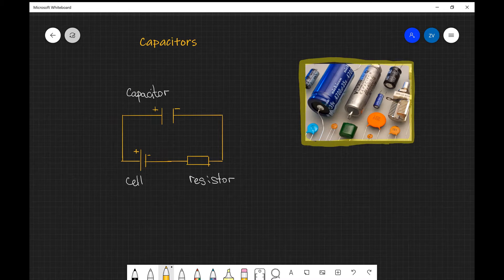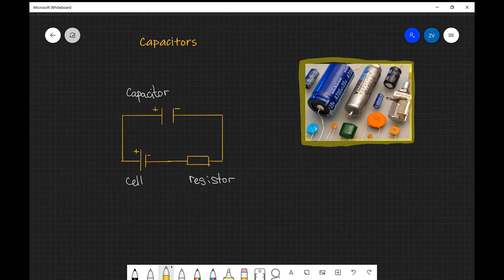Every capacitor has a positive and negative terminal when we're dealing with capacitors in the lab. Normally the positive will be labeled, for example this one here could be the positive terminal, and the one on the other side could be the negative terminal.